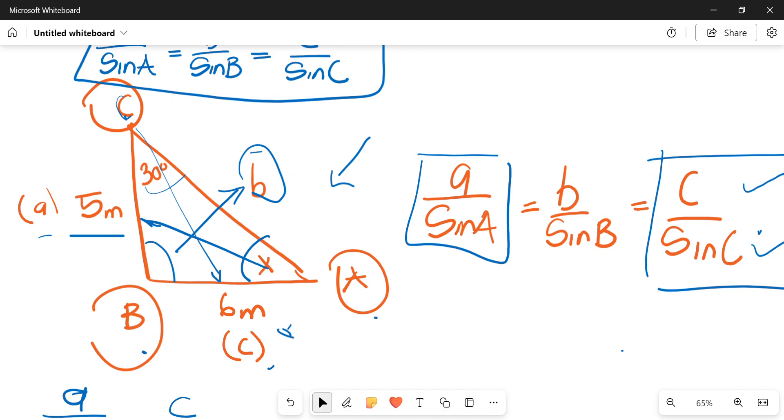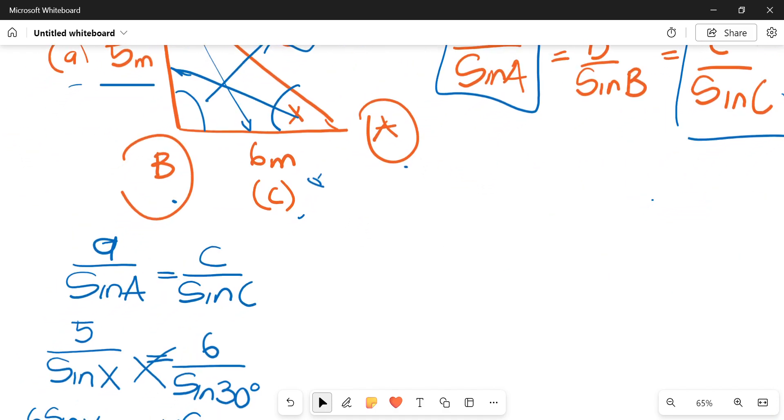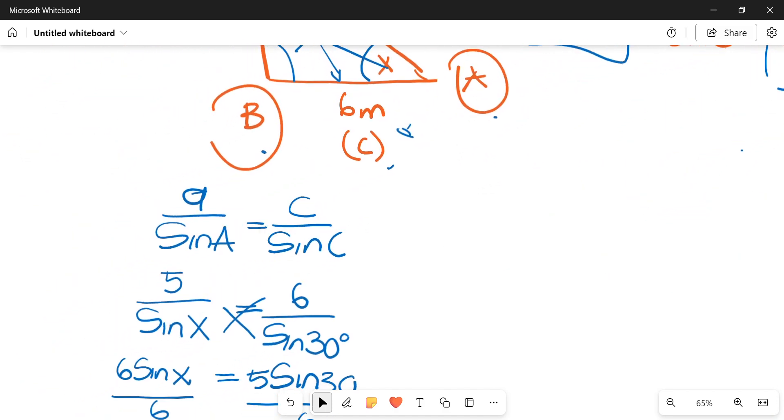From what we found on here, from what we have that is known, we have the length of A, we have the angle of A which is X, we don't know the variable. We have the length of C, and we have the angle of C, which is 30. So it's already suggesting or it's already a good indicator that we're going to use A over sine A as well as our C over sine C.